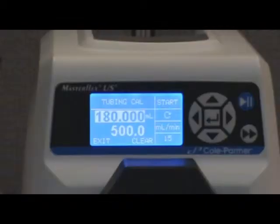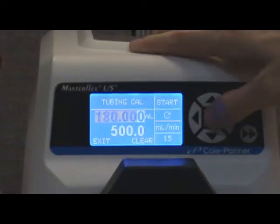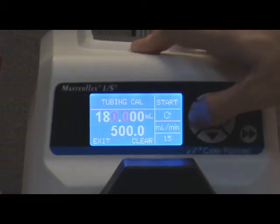After the pump has stopped, read the amount in the graduated cylinder. Be sure to read the bottom of the meniscus in order to obtain accurate results. After reading the volume in the cylinder, the cal volume field will be highlighted. Press the enter button and adjust the volume to match your result.